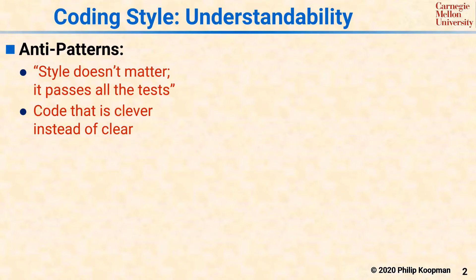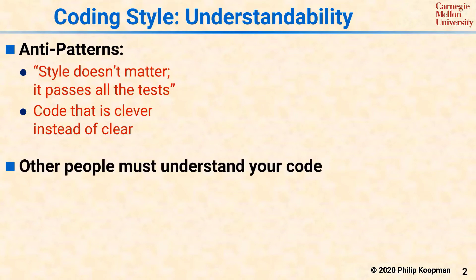Source code is written for two different audiences: compilers and other people. For this tutorial, the most important point is that other people must be able to understand your code.